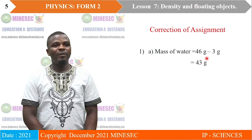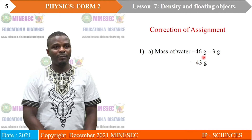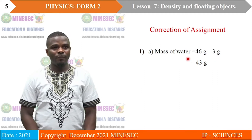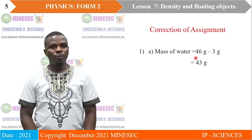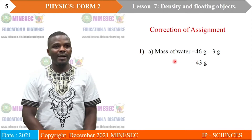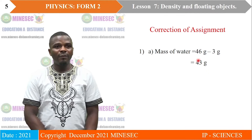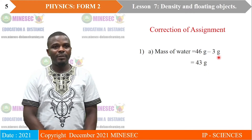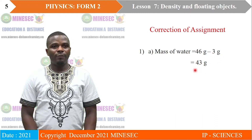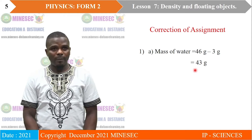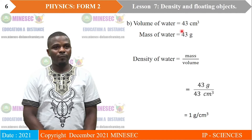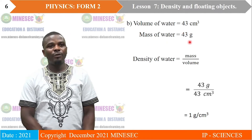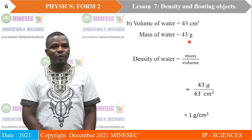The mass of the measuring cylinder containing water is 46 grams and the mass of the empty measuring cylinder is 3 grams. For us to obtain the mass of water only, we need to subtract the mass of the empty measuring cylinder from the mass of the measuring cylinder containing water. The difference gives us the mass of the water only. Therefore, the mass of the water is 46 grams minus 3 grams, which gives us 43 grams. The volume of the water is given to be 43 cm³, and we have successfully measured the mass of the water only to be 43 grams.